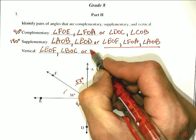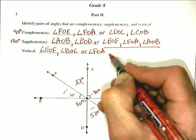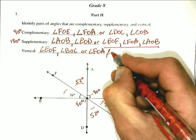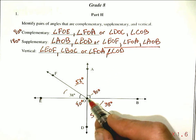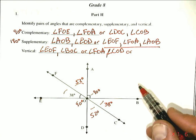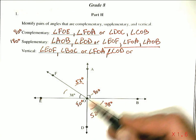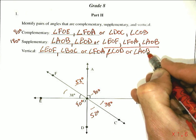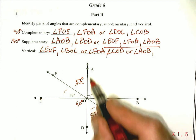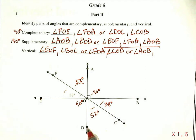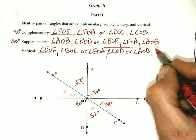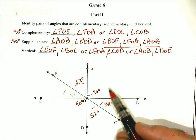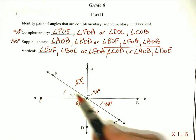The second pair: angle FOA is vertical to angle COD — those two are vertical angles. The third pair: these two 90-degree angles — angle AOB and angle DOE — are also vertical angles. So you have three pairs of vertical angles in this picture.